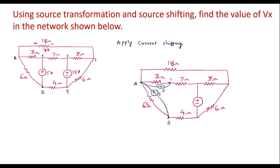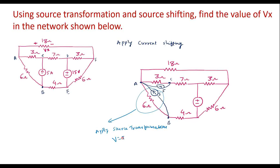Now in this circuit, the current source is in parallel with a resistor. Here also the current source is in parallel with a resistor. I will apply source transformation and convert the current source into voltage source. V is equal to I into R. Here I is 5, resistor is 6, so the magnitude of the voltage source is 30 volts.